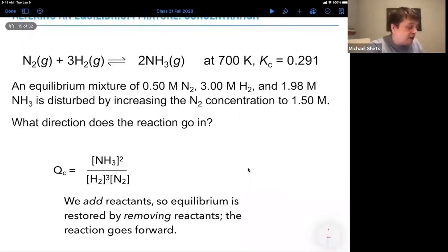So we could do this mathematically as well. We can look at the QC and say, okay, we've added nitrogen. That makes QC lower than KC, which means that the reaction has to go in the forward direction.